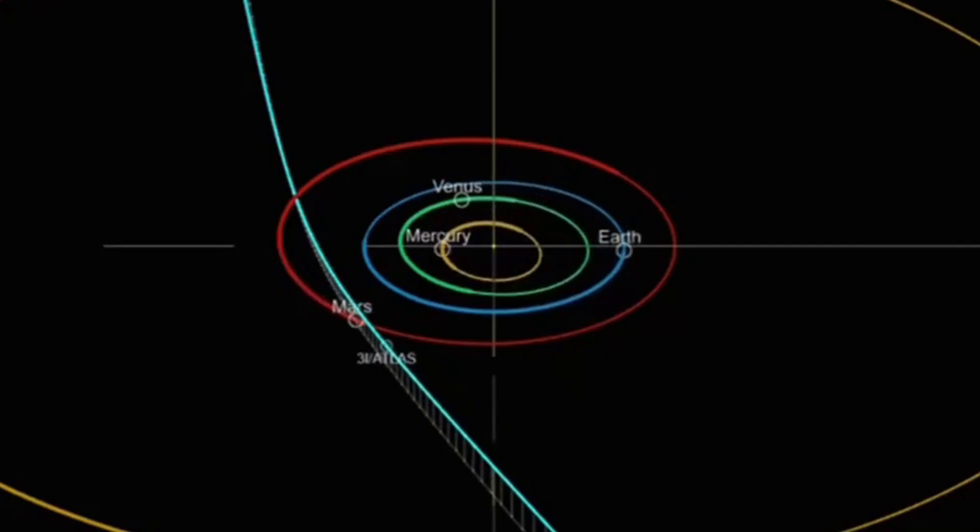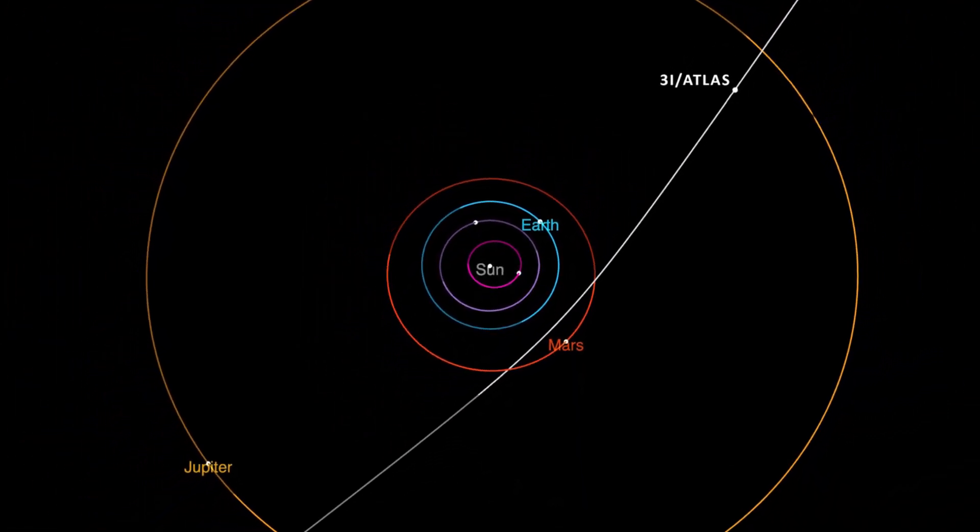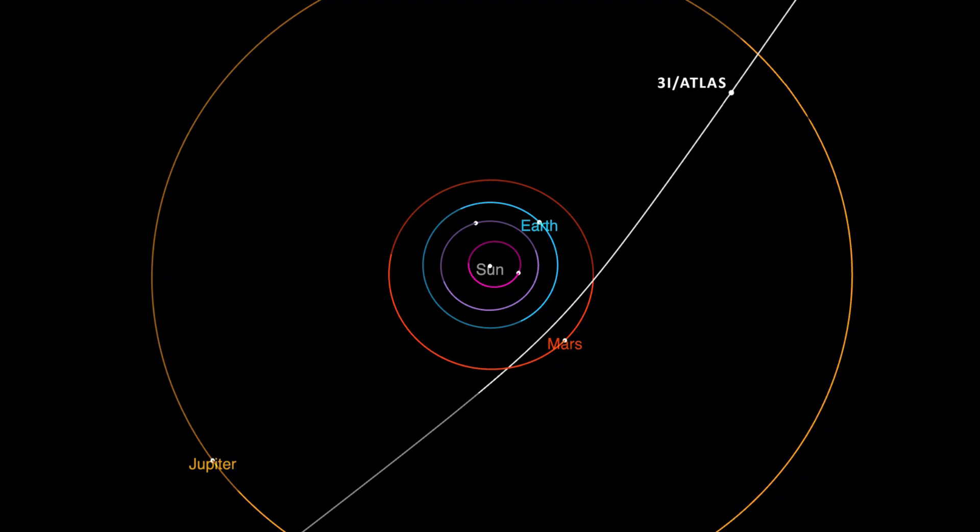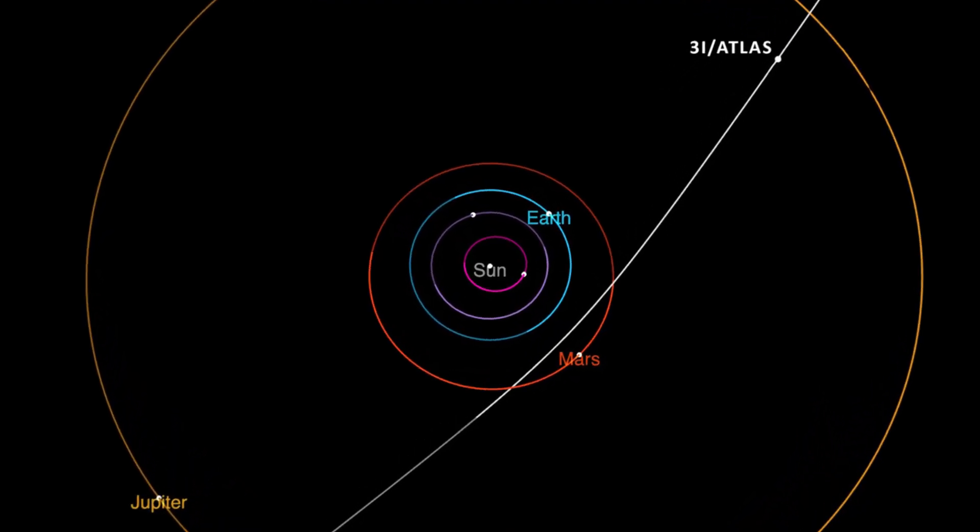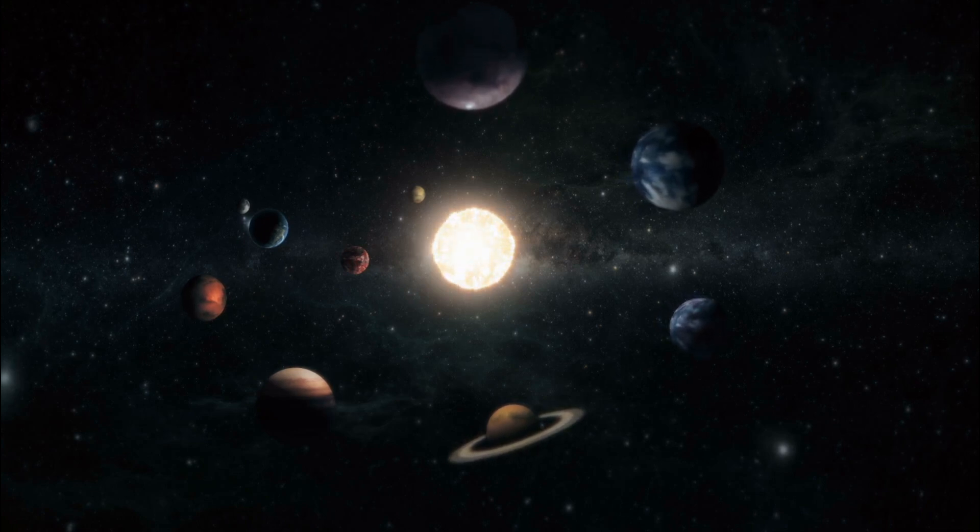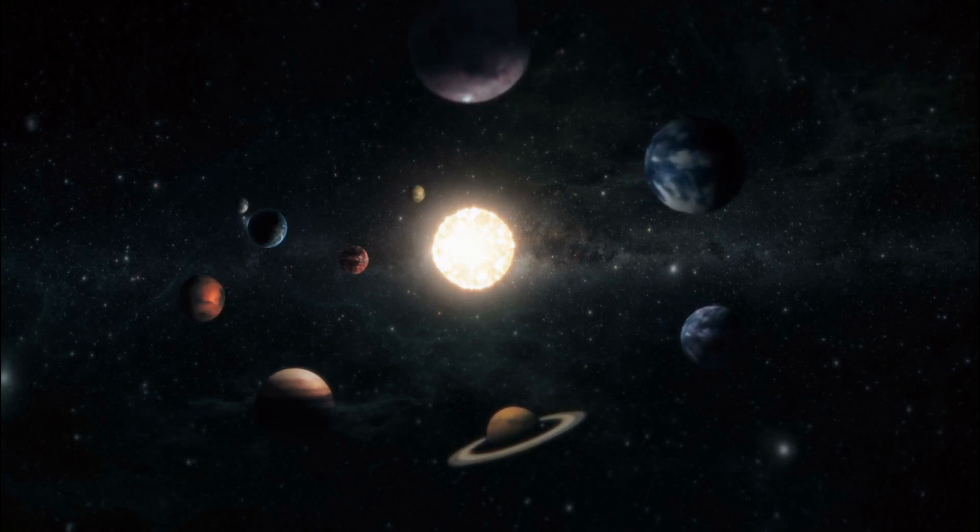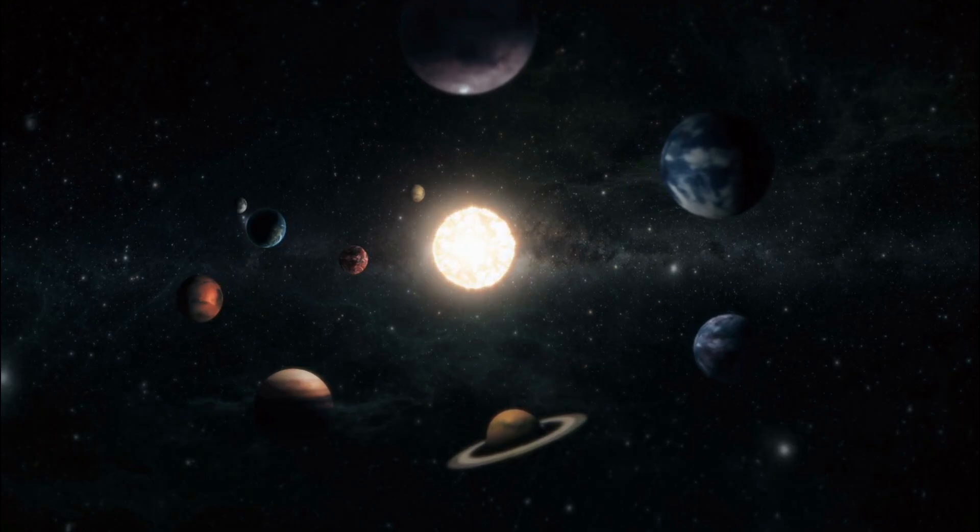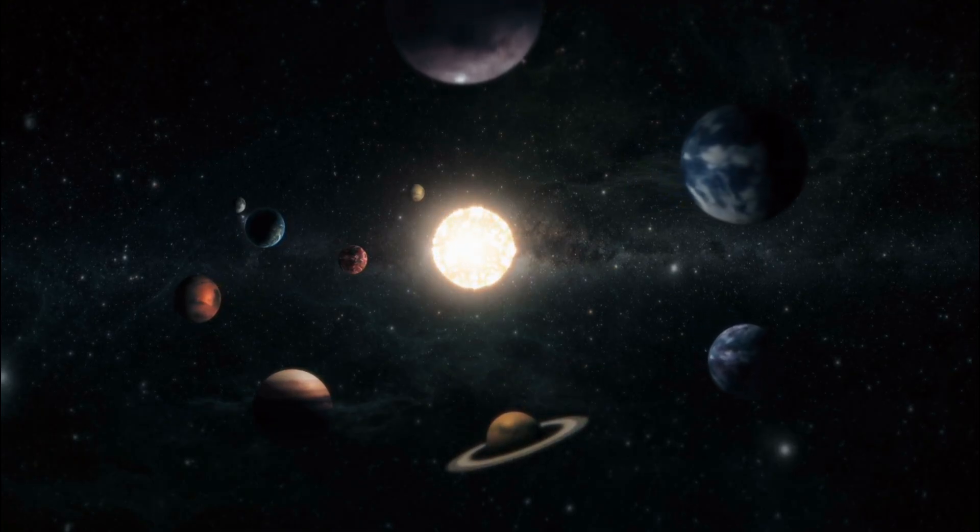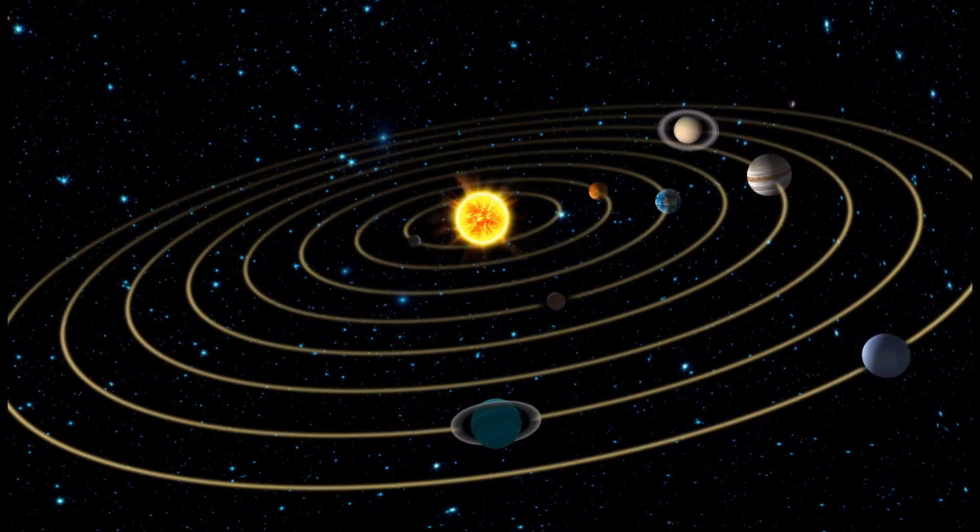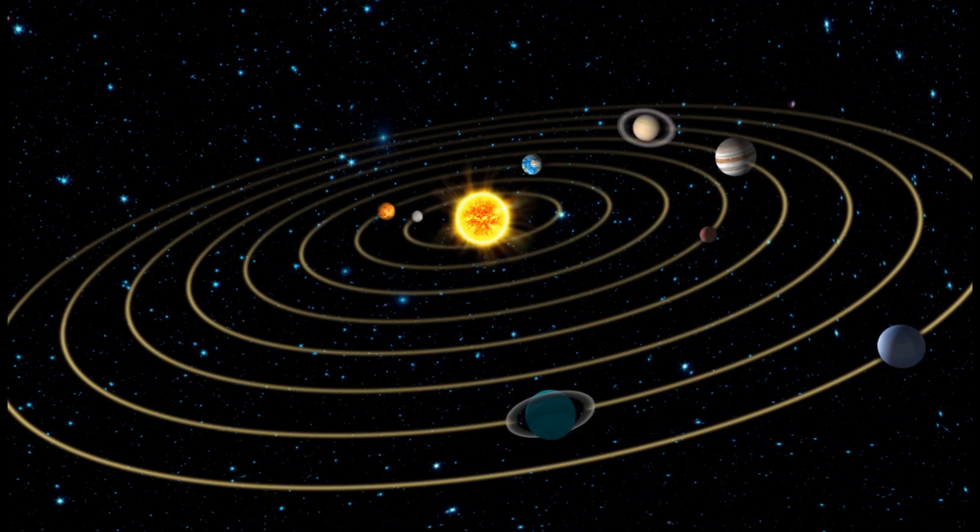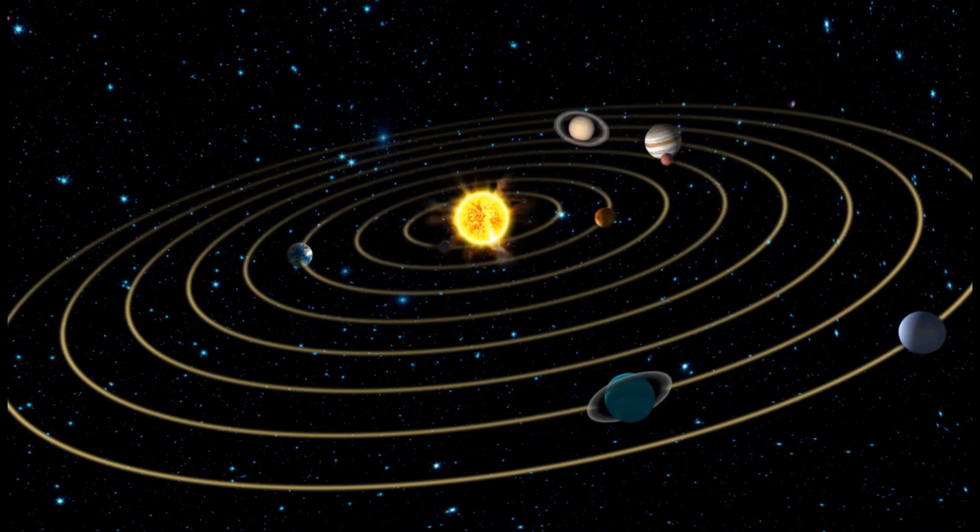Why did 3i Atlas's arrival seem so perfectly timed? The probability of an interstellar body aligning its trajectory to pass so close to three major planets, Mars, Venus, and Jupiter, within such a short window of time, is vanishingly small. To intersect not just the solar system, but the precise orbital plane where most planets travel, stretches coincidence to its breaking point. Was it a random alignment dictated by chance and gravity? Or does this seemingly choreographed passage hint at a deeper, hidden pattern we have yet to recognize?